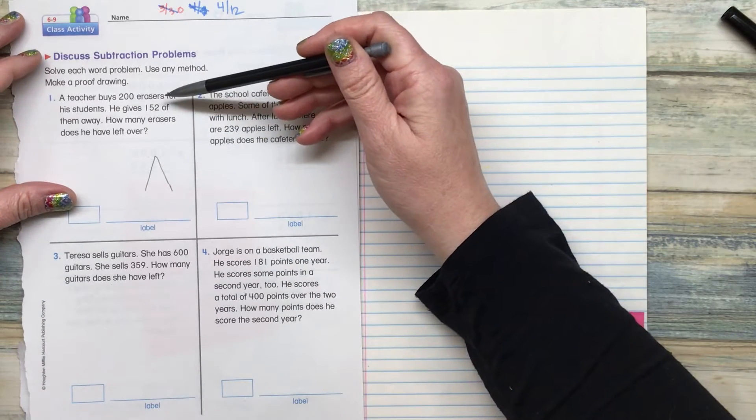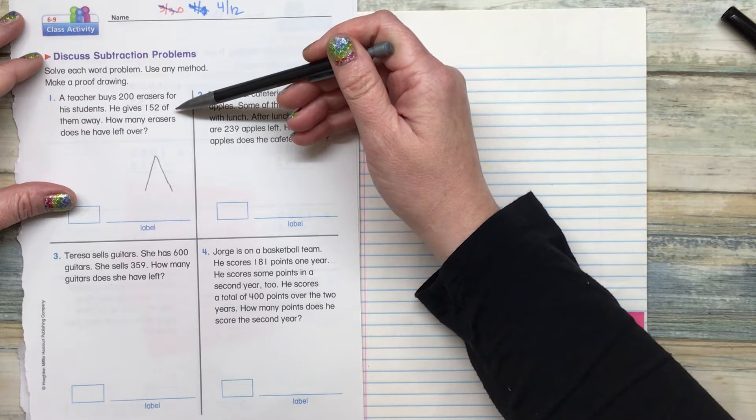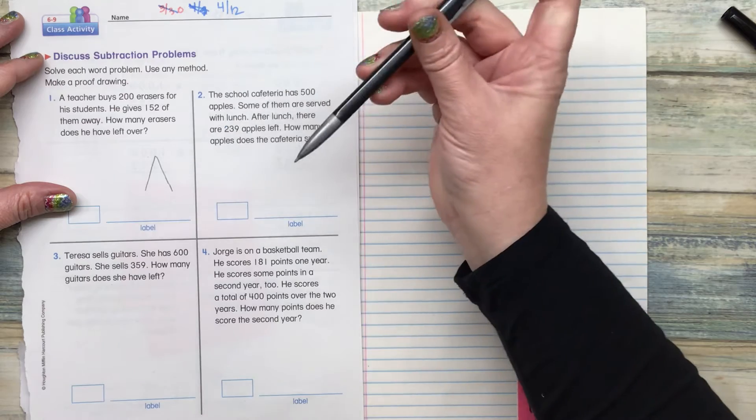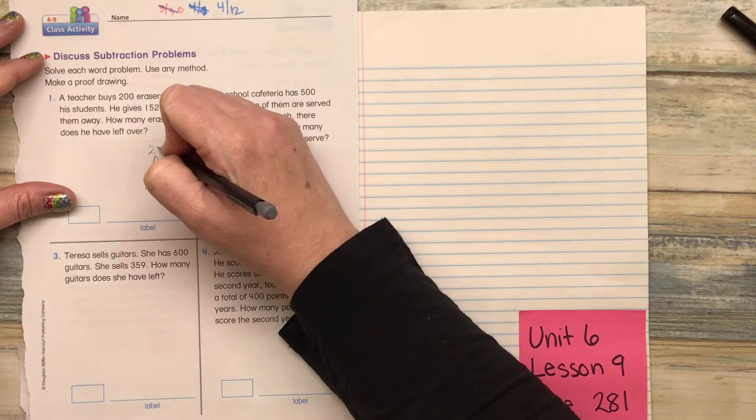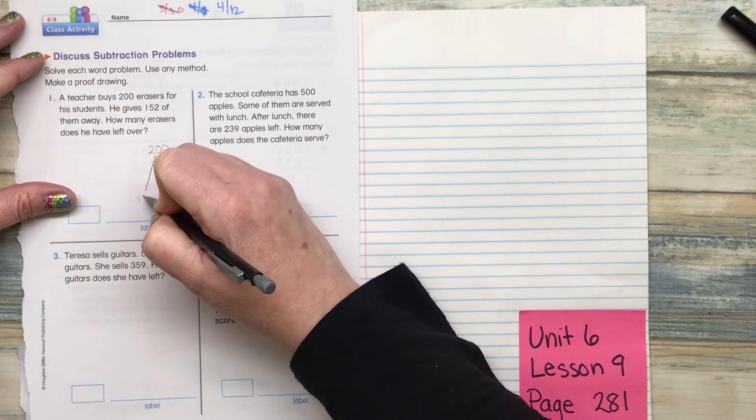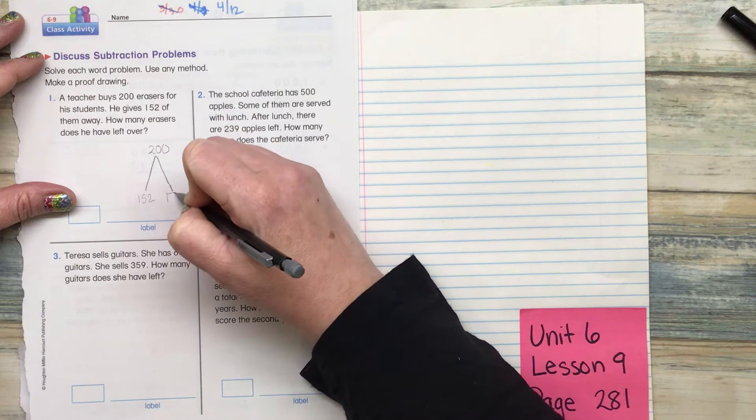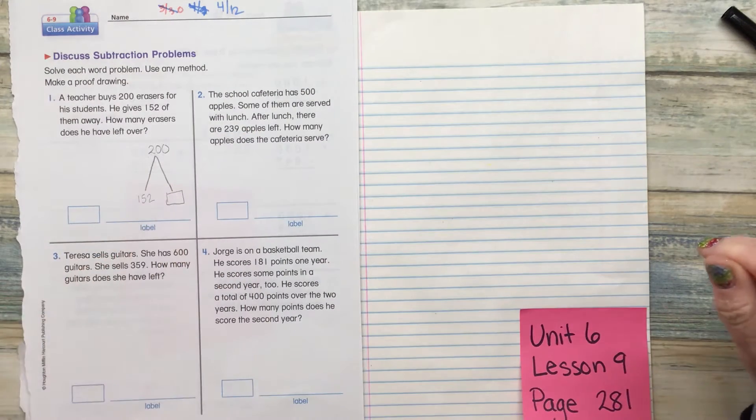A teacher buys 200 erasers for his students. He gives 152 of them away. How many erasers does he have left over? So if I'm making a math mountain, my total that we start with is 200 and one of the partners is 152. So we're looking for how many are left over and that will be the other partner.